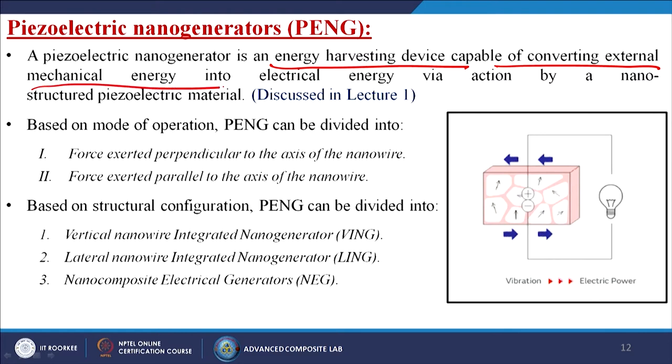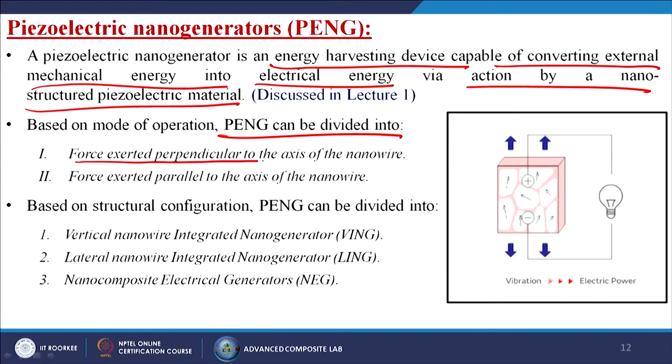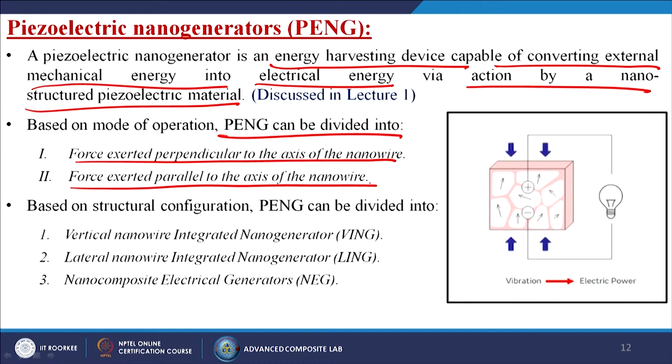A piezoelectric nanogenerator — in short called PENG — is an energy harvesting device capable of converting external mechanical energy into electrical energy via nanostructured piezoelectric materials. Based on mode of operation, PENG can be divided into: force exerted perpendicular to the axis of the nanowire, and force exerted parallel to the axis of the nanowire. Depending on whether the material is kept horizontal or vertical, and the direction of strain, there are two different phenomena.